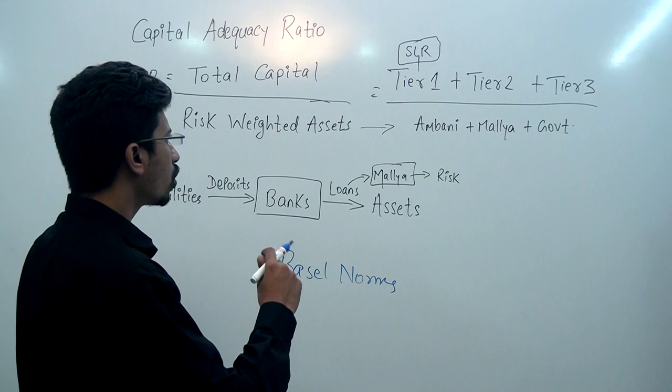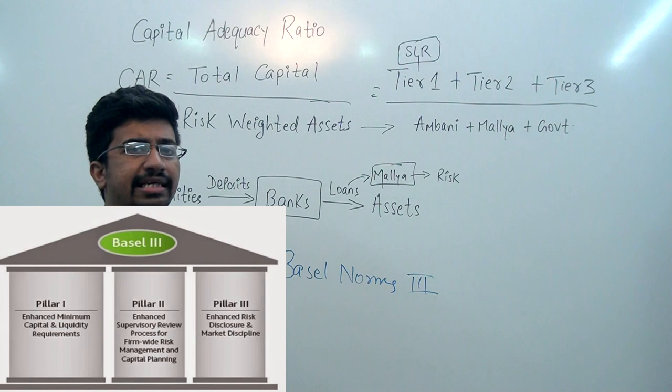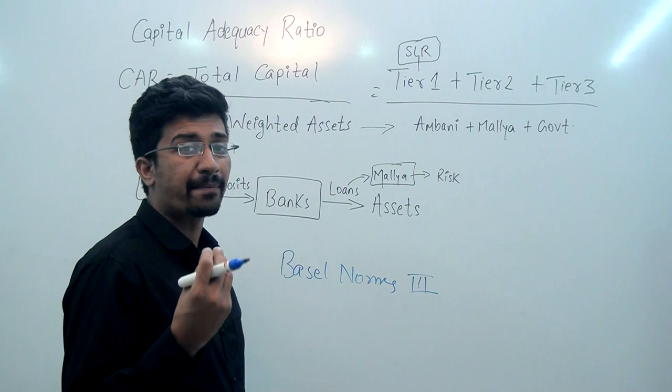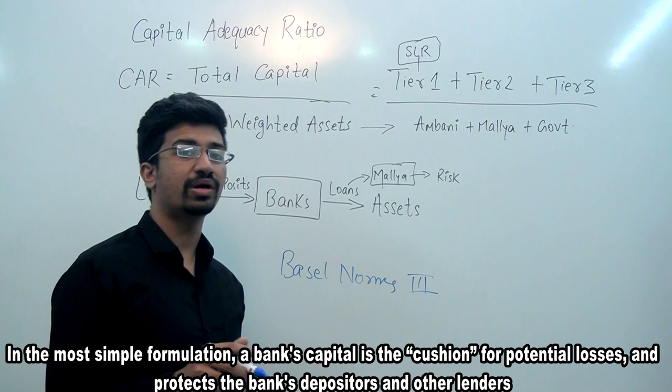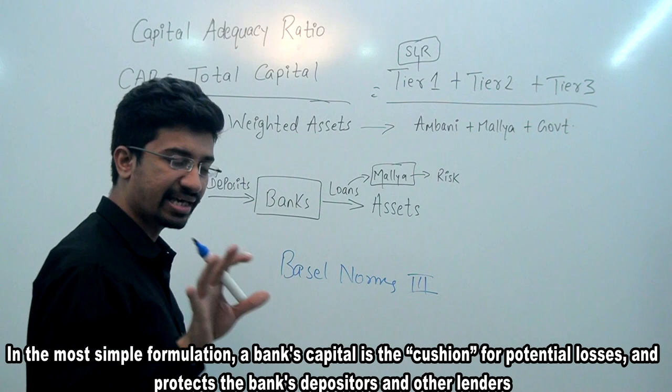The word 'adequacy' means sufficient. So capital adequacy means that banks should have an adequate — sufficient or abundant — amount of capital (money). There is also a ratio involved here, meaning banks must maintain adequate capital in a certain proportion. That proportion is relative to what will come — risk-weighted assets. We will look at the formula carefully, but first let me take you to another concept.